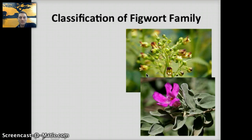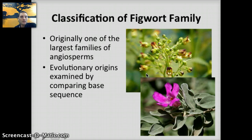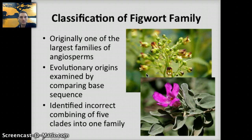The figwort family is a family of flowering plants — mostly herbs and some shrubs found in temperate areas. Originally one of the largest families of angiosperms, after comparing DNA sequences and examining evolutionary origins, it was found that many organisms had been incorrectly included. There were actually five clades within one family, and our ability to extract and sequence DNA allowed us to examine these species and reassign them from the original single family.